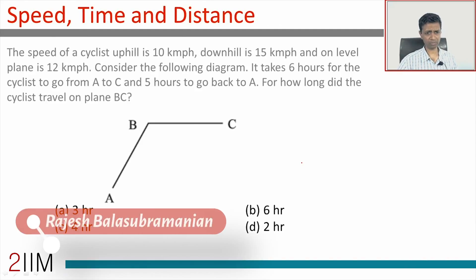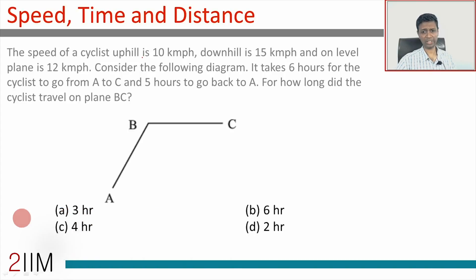This one's on speed, time, distance. Interesting question. The speed of a cyclist uphill is 10 kilometers per hour, downhill is 15 kilometers per hour, and on level plane is 12 kilometers per hour. Consider the following diagram.